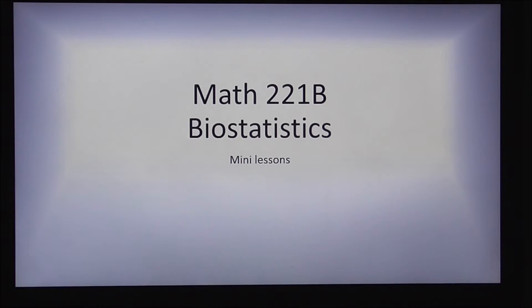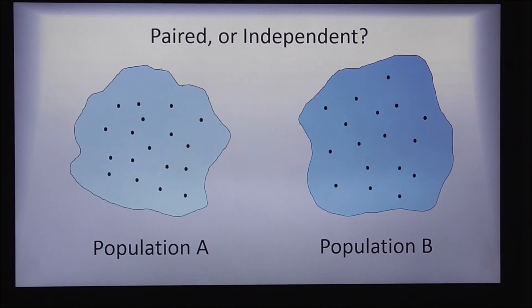This mini-lesson is particularly for students in Math 221B biostatistics. When I'm doing a quantitative analysis and I have two samples, I need to figure out if they're paired or if they're independent from each other.